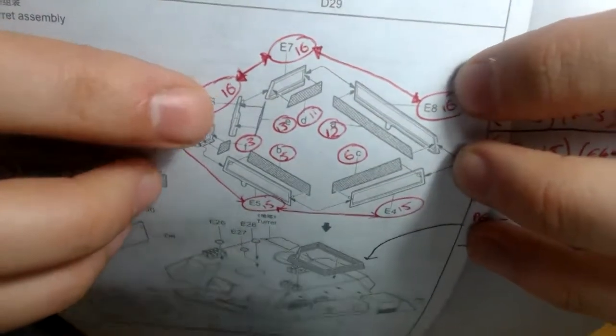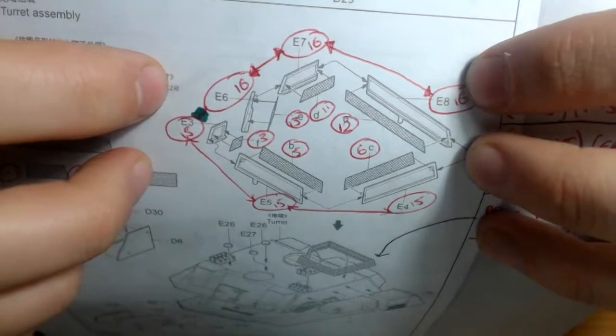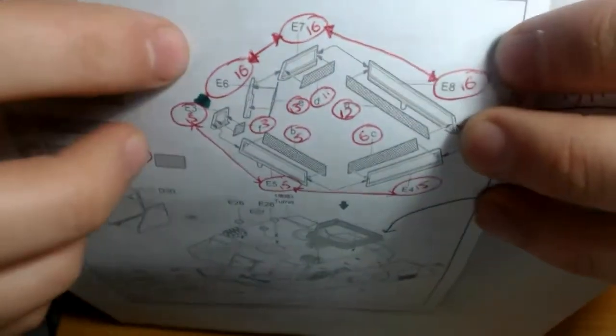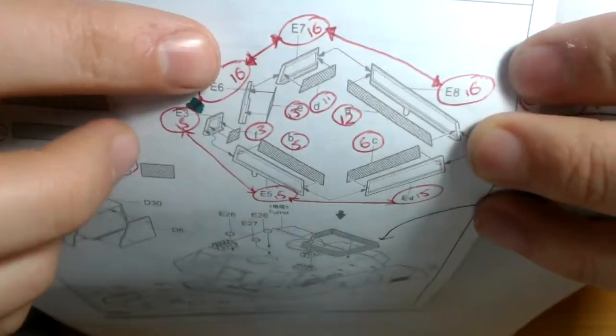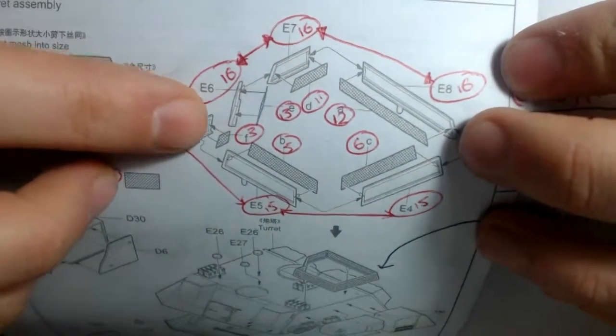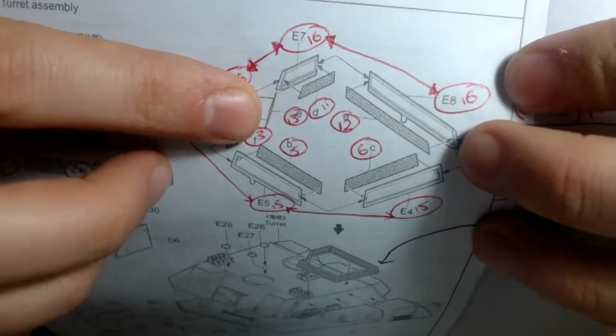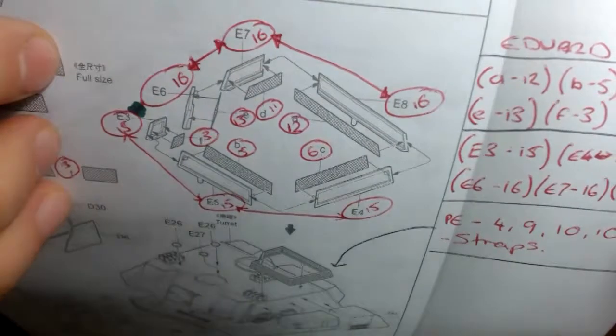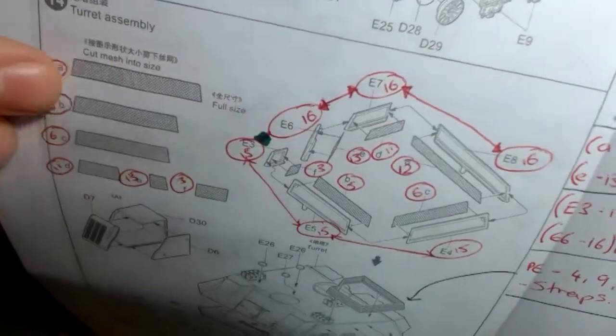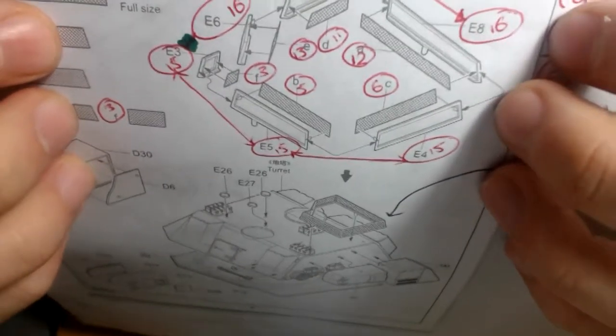In the Trumpeter kit all these sections are separate whereas in the photo-etch itself they're all one. So that's what the arrows are to kind of indicate that I'll need to be doing some bending to get them all in place. And then we've got the mesh which you would cut out with the mesh sheet that they give you but we actually have some photo-etch which will be more like this.